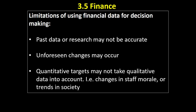Financial targets may not take qualitative information into account. Financial targets are quantitative — they are money based. Do they necessarily take any qualitative information into account? For example, is staff morale falling? Our profitability was 10% last year, but staff are miserable at the moment. Are they going to be able to perform at the same level this year? What trends are there going on in society? So a difficulty with using financial data to make decisions is that it potentially doesn't take into account qualitative data that the business may or may not have access to.